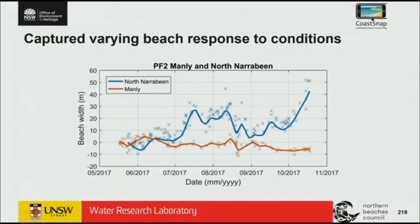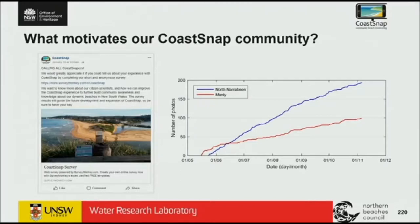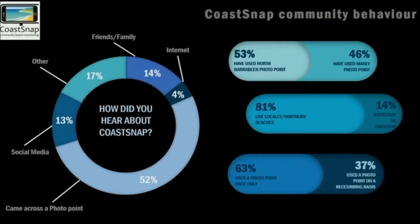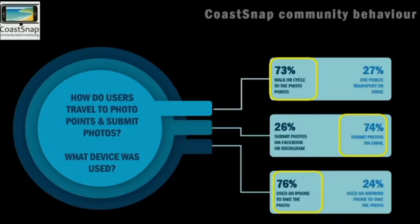Flying through the results: the record over six months through our program — the crosses are our photo contributions, the red circles are our GPS surveys. You can see a nice trend of beach change at Manly and at North Narrabeen, that's the width of the beach with the shoreline moving back and forth, and it compares well with our survey data. We've also been able to show that the beaches behave differently — basically the community has been able to develop an understanding of how these two beaches, which are only a few kilometres apart, behave differently to more or less the same conditions.